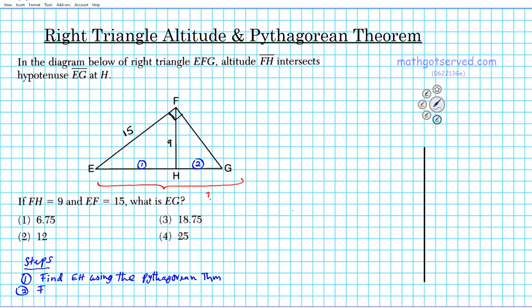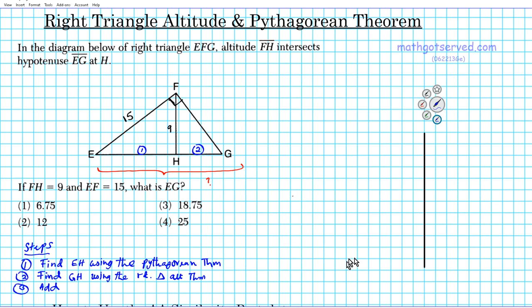Step two: we're going to find GH using the right triangle altitude theorem. Step three is a piece of cake — it's just arithmetic. We simply add EH and GH to get the needed side length, which is EG.